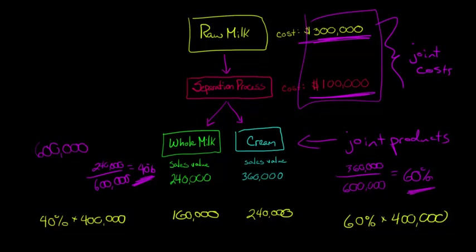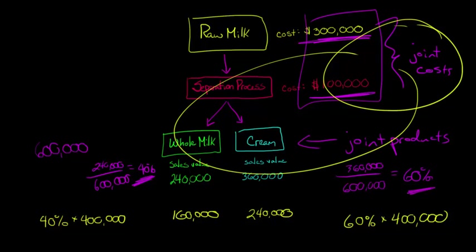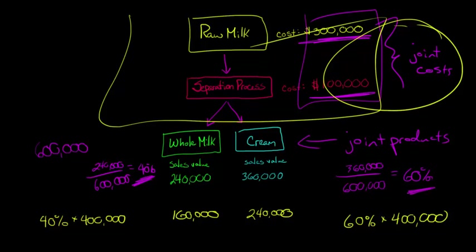Now be careful. Going forward after the split-off point, you really want to be careful. You don't want to be using allocated joint costs to do any decision-making after the split-off point. Because these joint costs and the allocations are really only useful in determining whether the product or whether the process is profitable up until here.